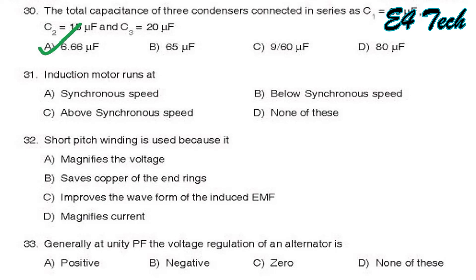Next, the induction motors runs at single unit speed below, single unit speed above, single unit speed, none of these. Induction motors will always run at below synchronous speed. That is option B.